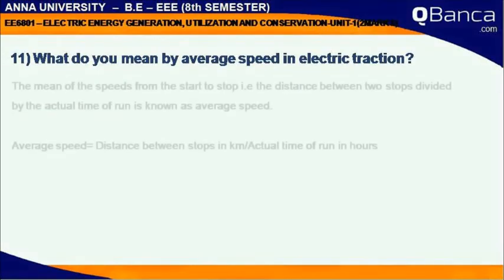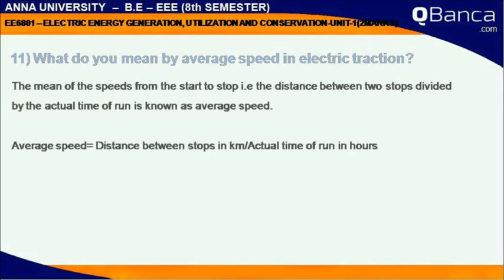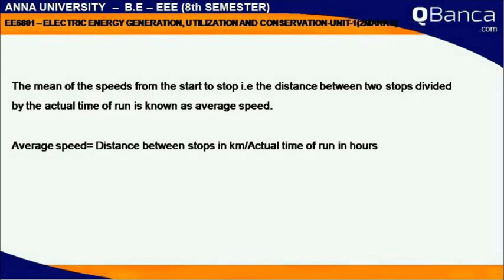What do you mean by average speed in electric traction? The mean of the speeds from start to stop, i.e., the distance between two stops divided by the actual time of run, is known as average speed. Average speed equals the distance between stops in km divided by the actual time of run in hours.